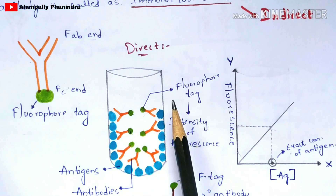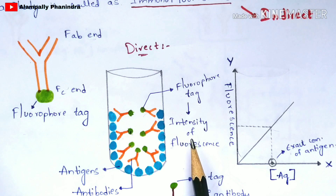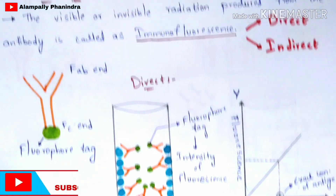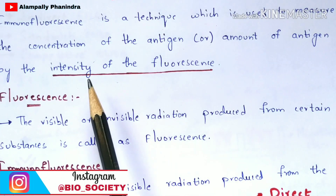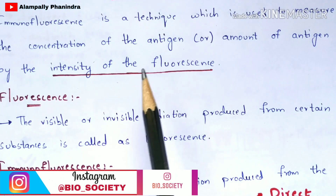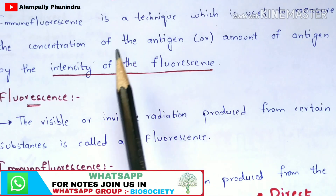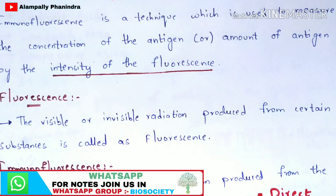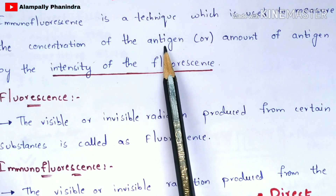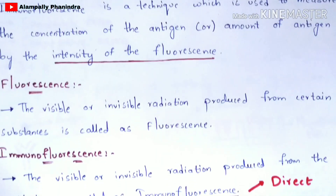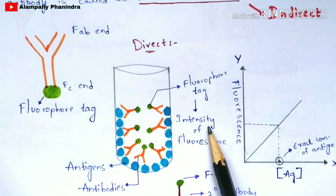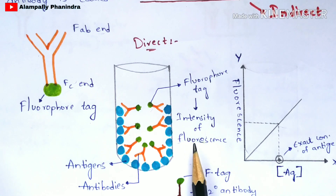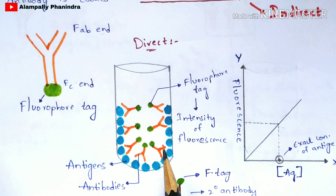The fluorophore tag mainly helps in the production of the intensity of the fluorescence. The main aim of immunofluorescence is to know the concentration of the antigen, which can be determined only by the intensity of the fluorescence. Once you know the intensity value, you can determine the concentration of the unknown antigen. The fluorophore tag is added to the antibody to produce this intensity of fluorescence.